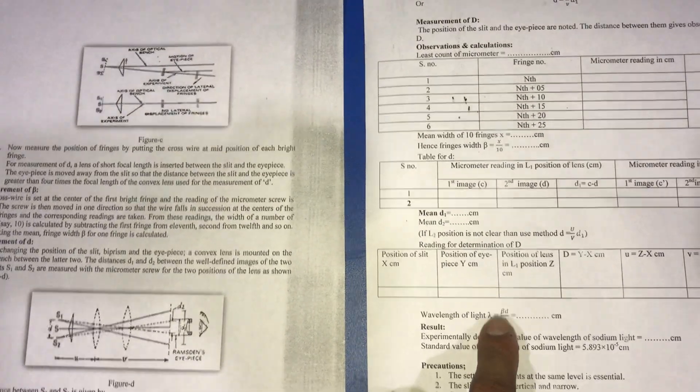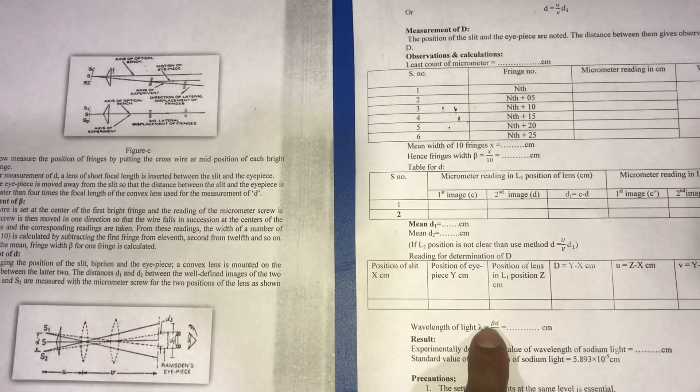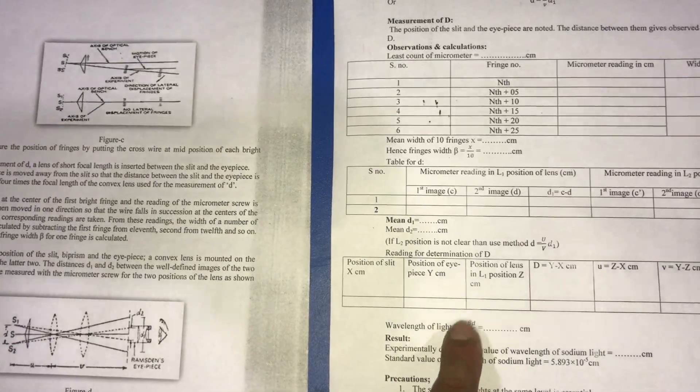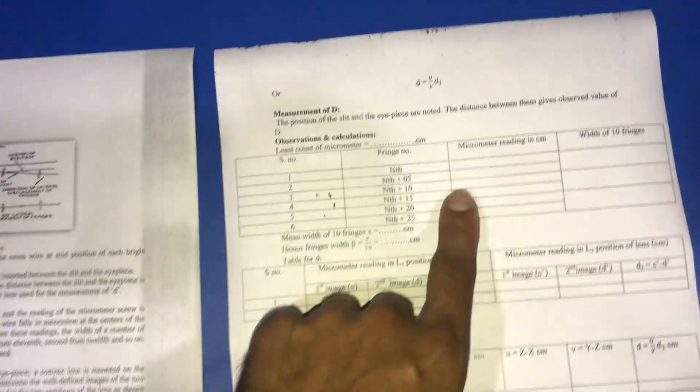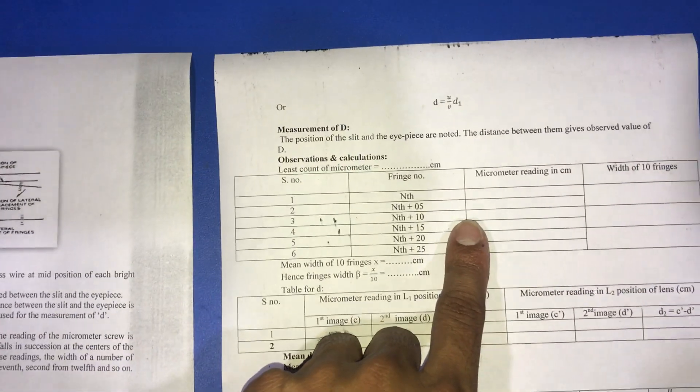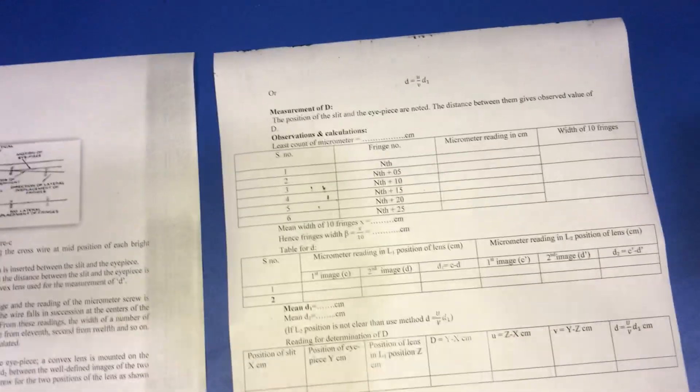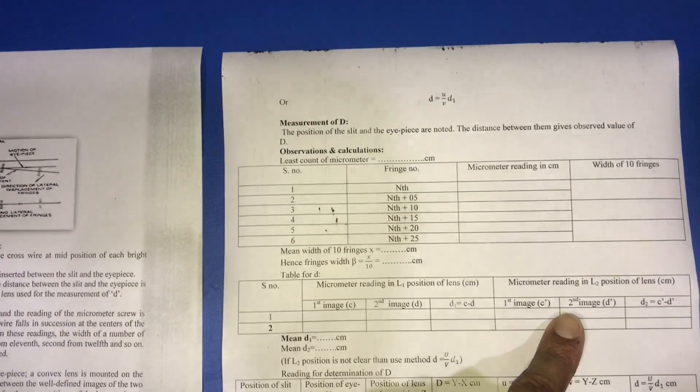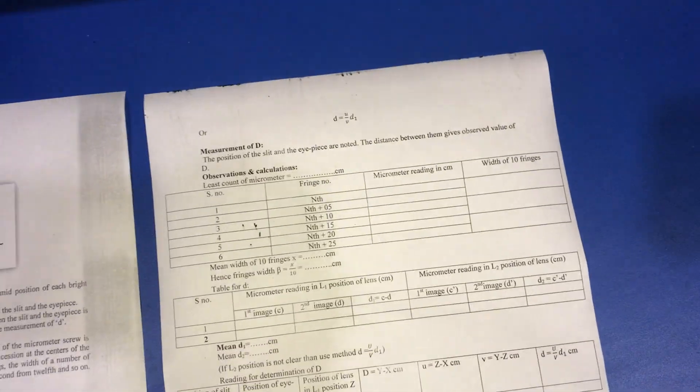On the basis of all these observations, we can calculate the wavelength of the monochromatic light, which is sodium light, as wavelength equals beta times d divided by capital D. Here, beta is the fringe width which we calculate from the table, small d is the distance between two sources, and capital D is the distance between the slit and eyepiece.